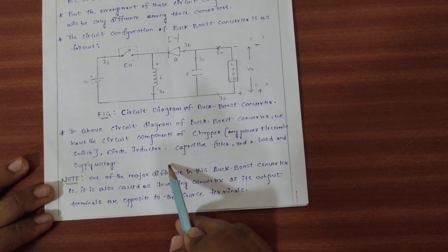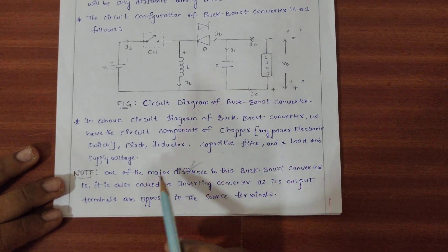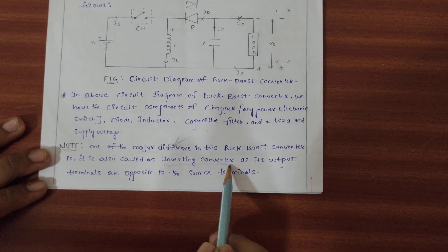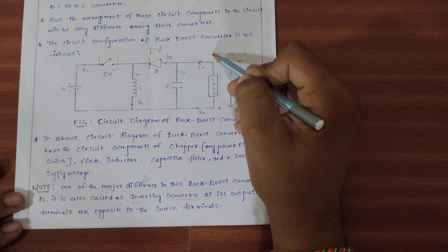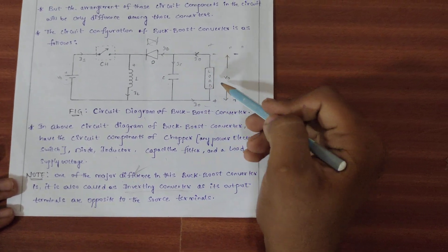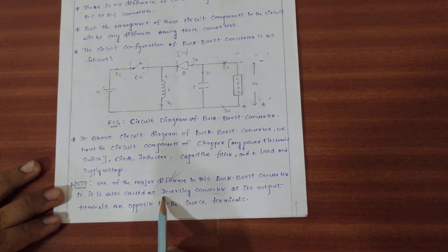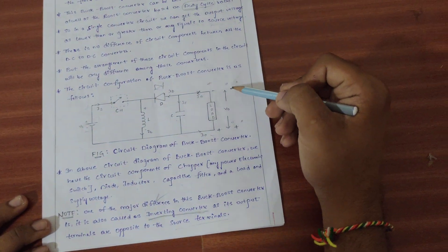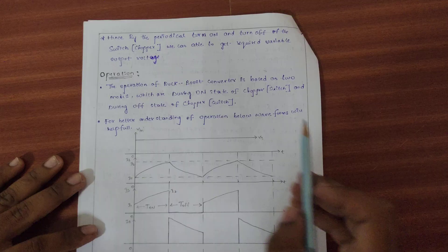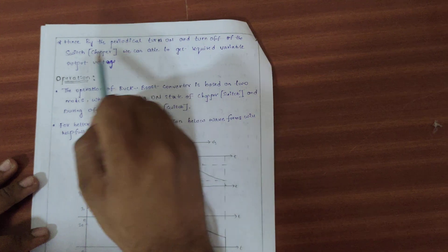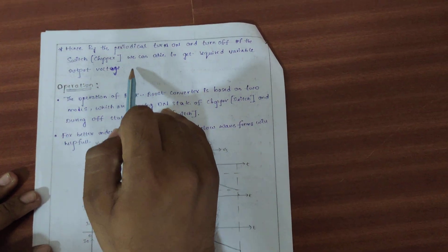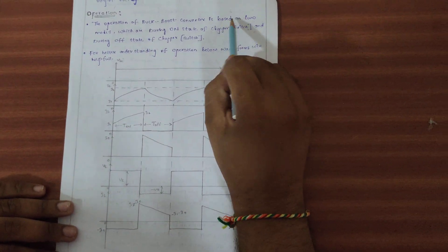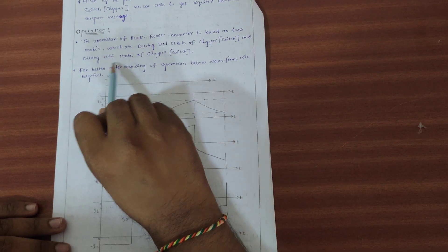One of the major differences in the buck-boost converter is that it is also called the inverting converter. By the reverse turn-on and turn-off of the switch or chopper, we are able to get the required variable output voltage, which may be less than or greater than the source voltage. The operation depends upon two modes: during onset of the chopper and during offset of the chopper.